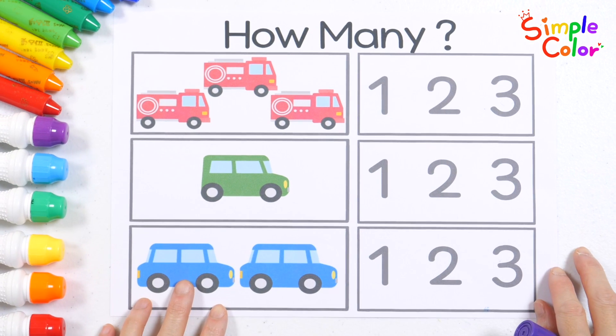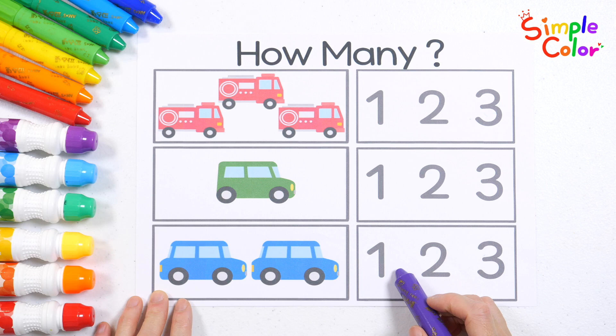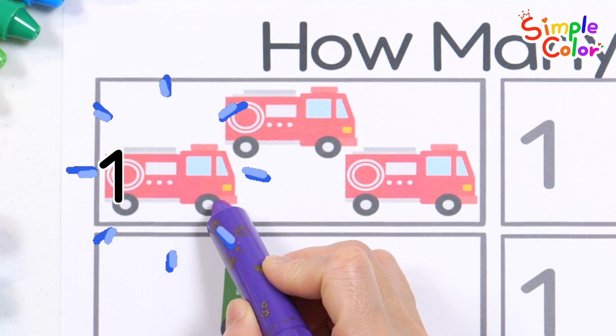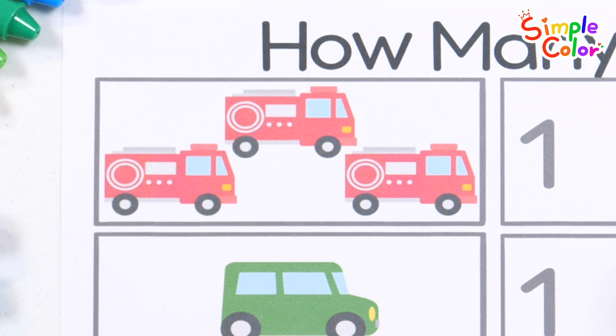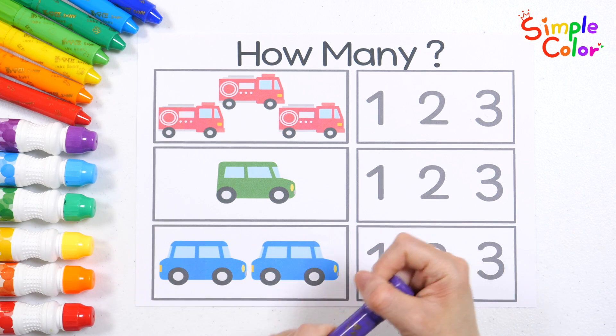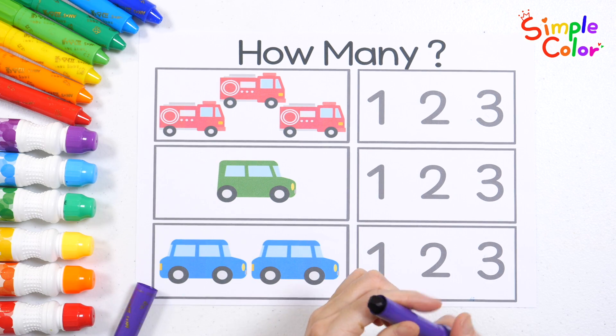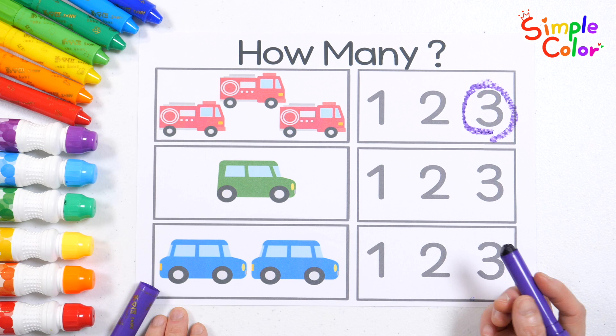Let's count the pictures and find the correct number for how many there are. How many fire trucks do you see? One, two, three. Three fire trucks. Find the number three and circle it. That's right! Three.